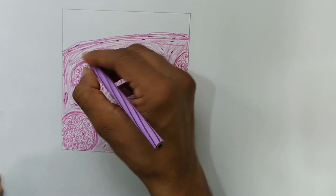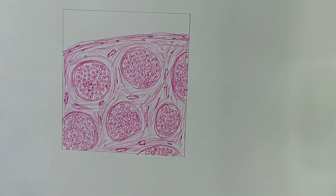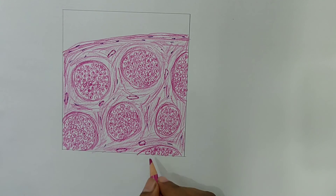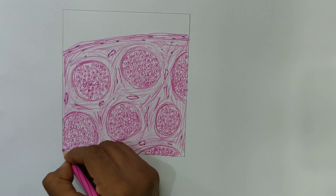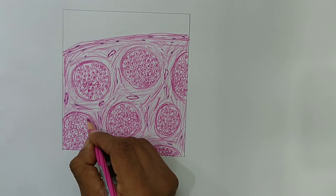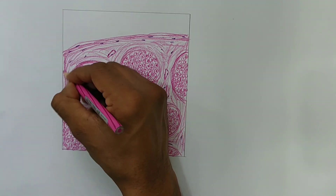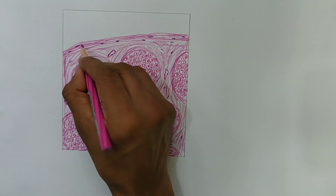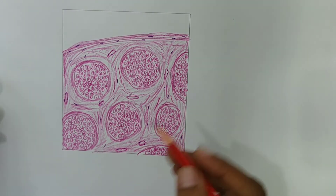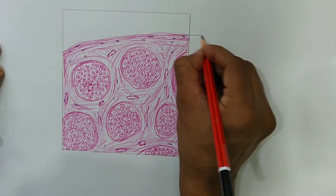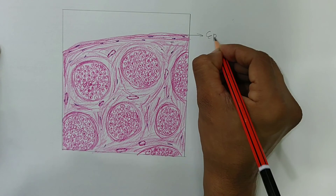We finish the histological diagram of peripheral nerve in transverse section. Now let's label it. This is the epineurium.